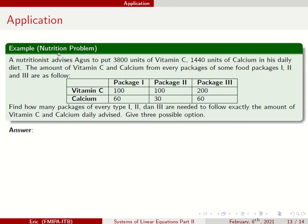This is a nutrition problem. A nutritionist advises Agus to put this amount of vitamin C and this amount of calcium in his daily diet. The amount of vitamin C and calcium for every package of some food: Package 1 contains C for this unit and calcium in this unit. Package 2 has this vitamin C and this calcium. Package 3 has this vitamin C and this calcium.